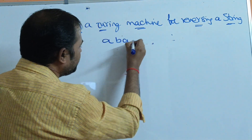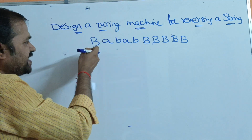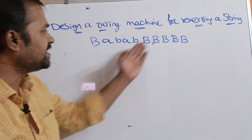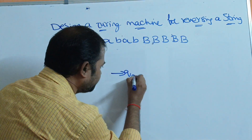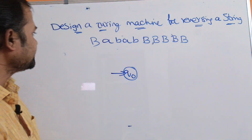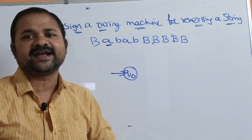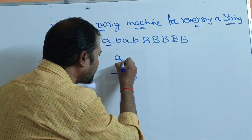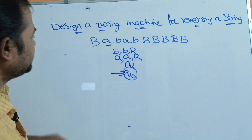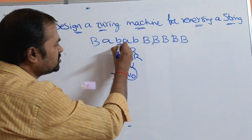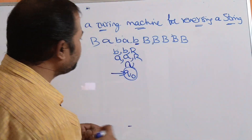Let the input string be ABAB. Before the ABAB, we can have any number of blank symbols. After the ABAB also, we can have any number of blank symbols. Initially, we are at Q0 state, which is the initial state. We start at small a. Our target is to move the head towards the right till we get the blank symbol. So if we apply any number of A's on Q0, keep it the same but move the head towards the right. Any number of B's on Q0 — keep same, move right. This is a self-loop: A means A, move right; B means B, move right.